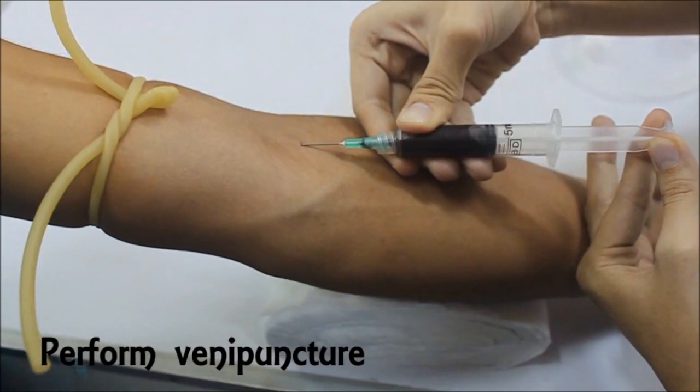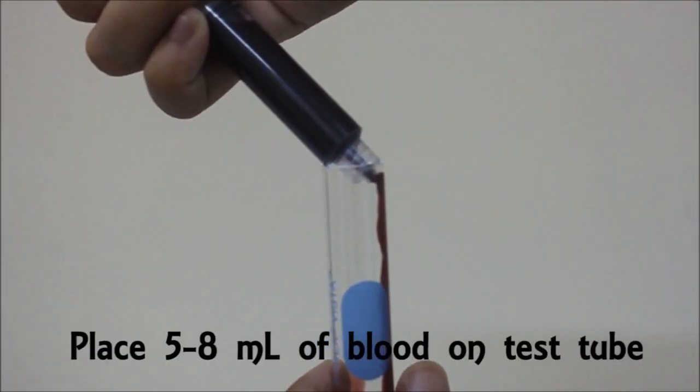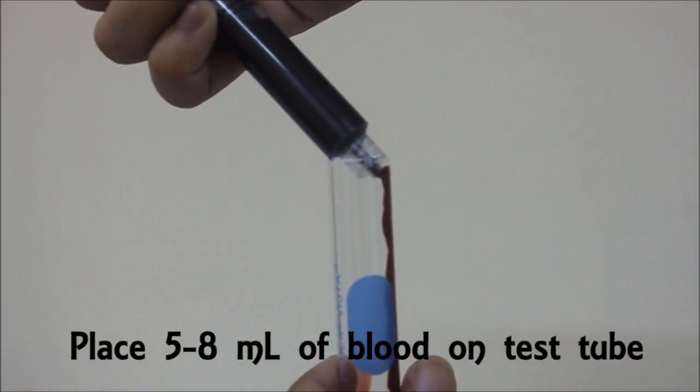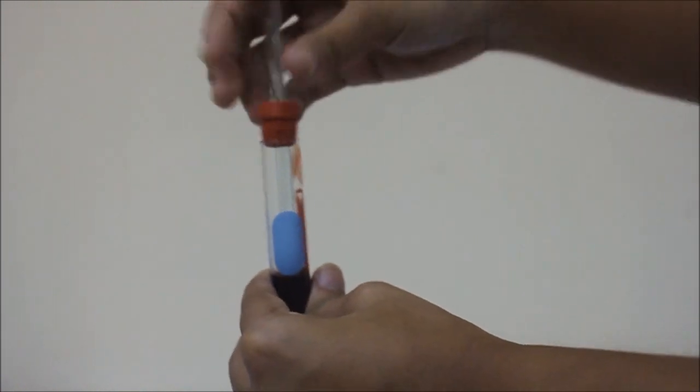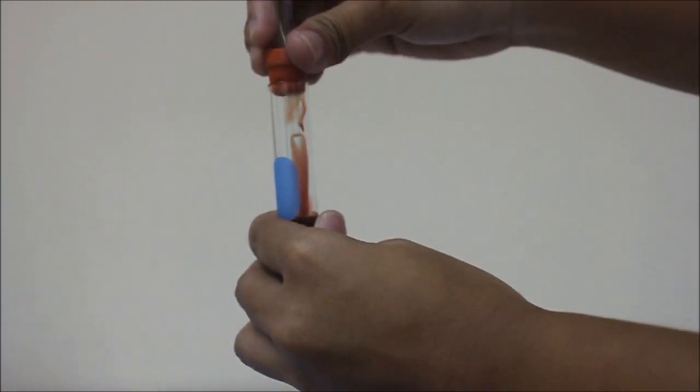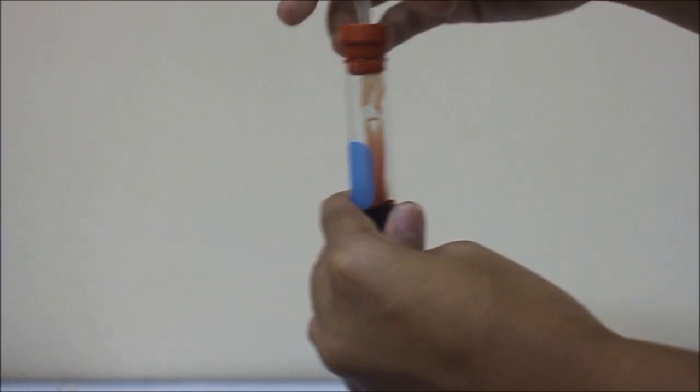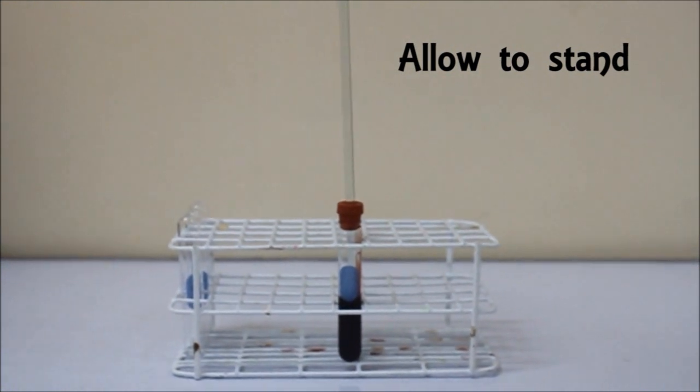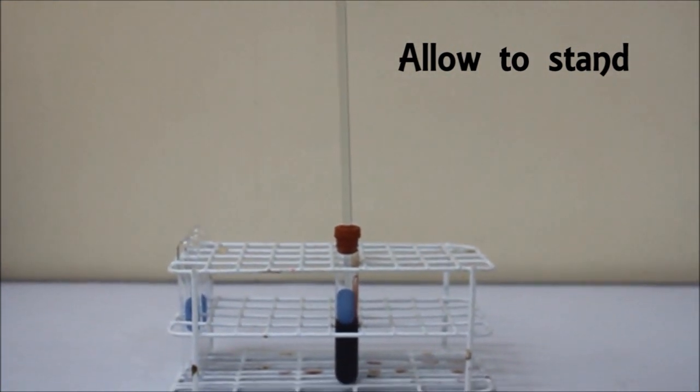To begin, collect blood by venipuncture. Place 5-8 mL of blood in a clean test tube. Cover the test tube with cork to which a stirring rod is fitted. Allow the setup to stand in a vertical position on a test tube rack.